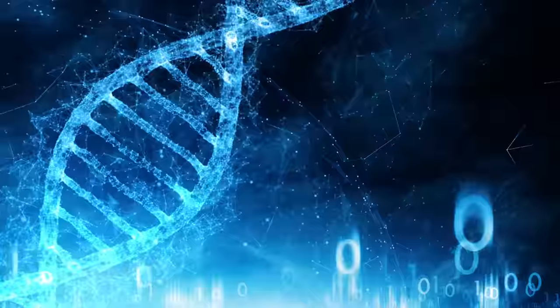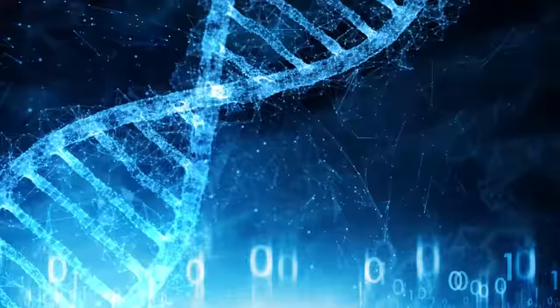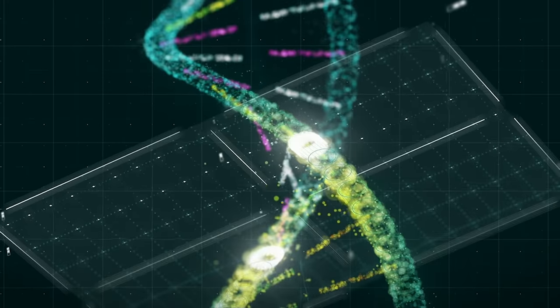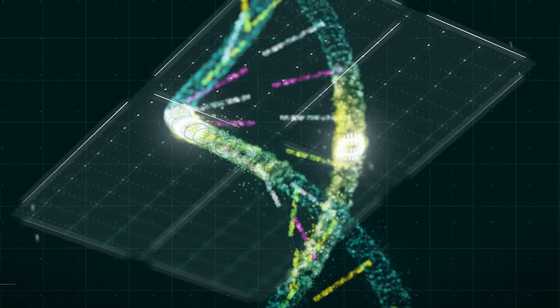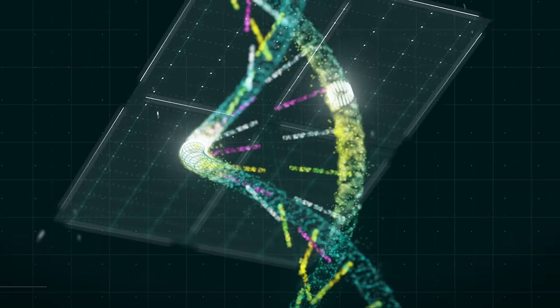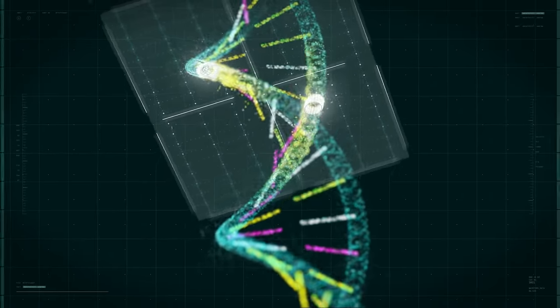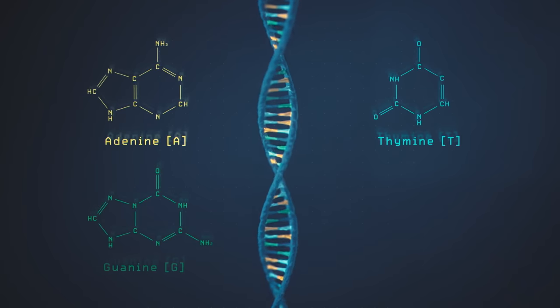Before talking about gene editing, we need to have clear in mind what genes are and how they work. A gene is simply a portion of DNA, which is the very long molecule encoding all the blueprint of a living organism. Each link in the long DNA chain contains one of four bases: A, T, C, or G.